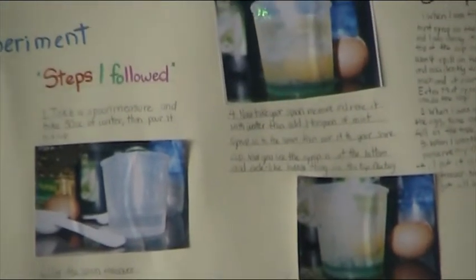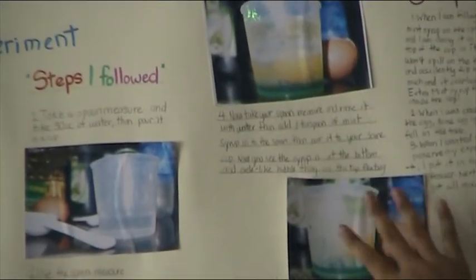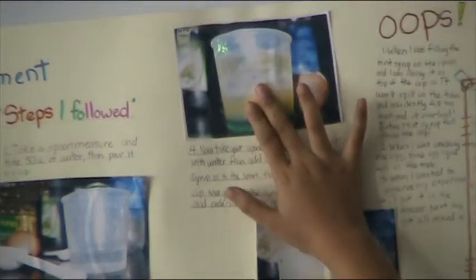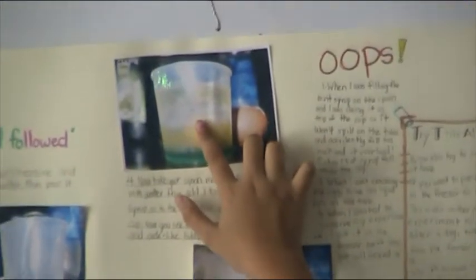The fourth step is take your spoon measure, rinse it because there's oil on it, and then pour one tablespoon of mint syrup onto the spoon and pour it into the cup. You can see there's small, bubble-shaped particles on the top and it looks crystallized.